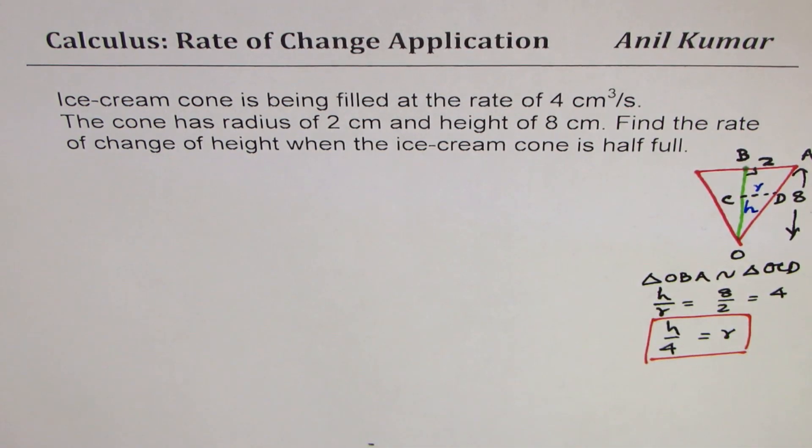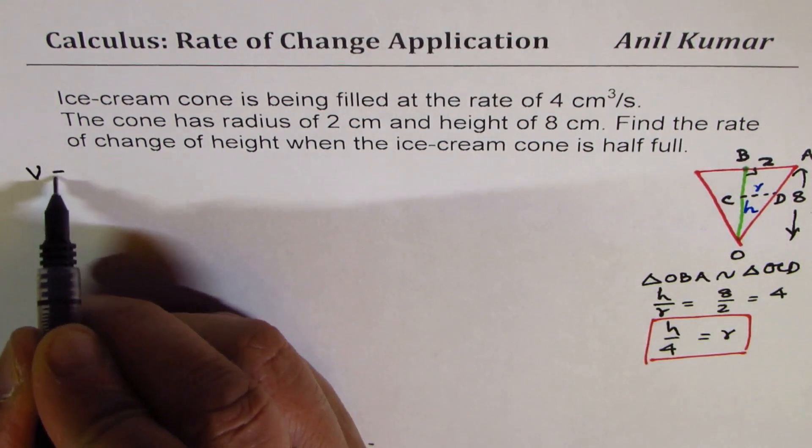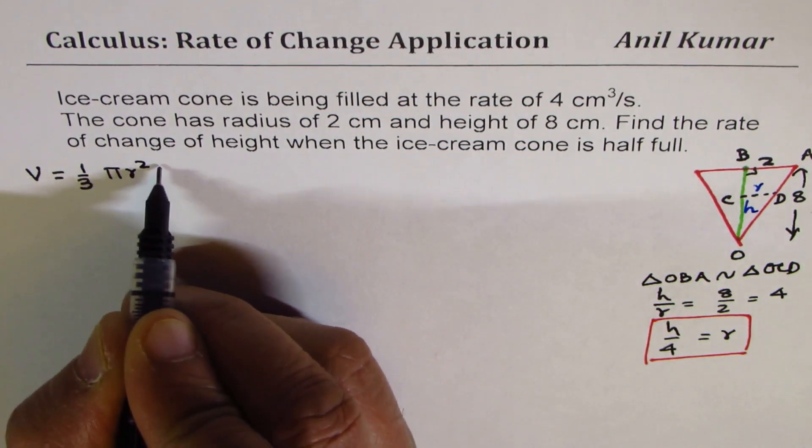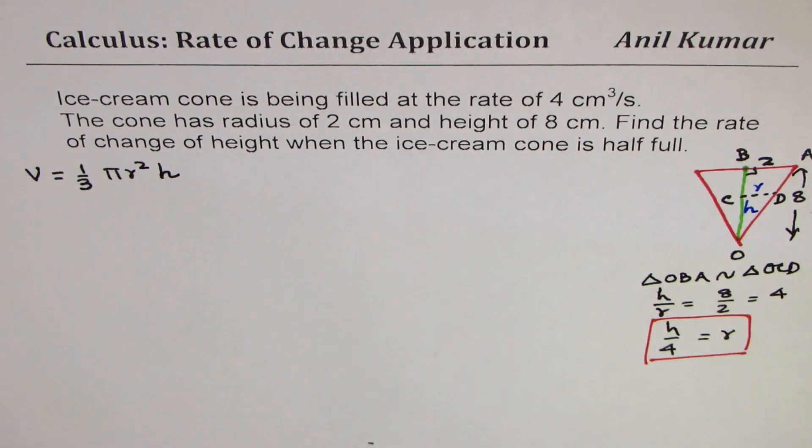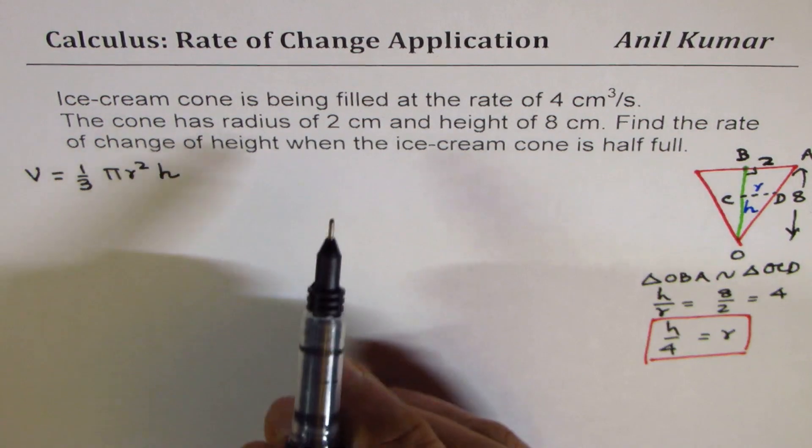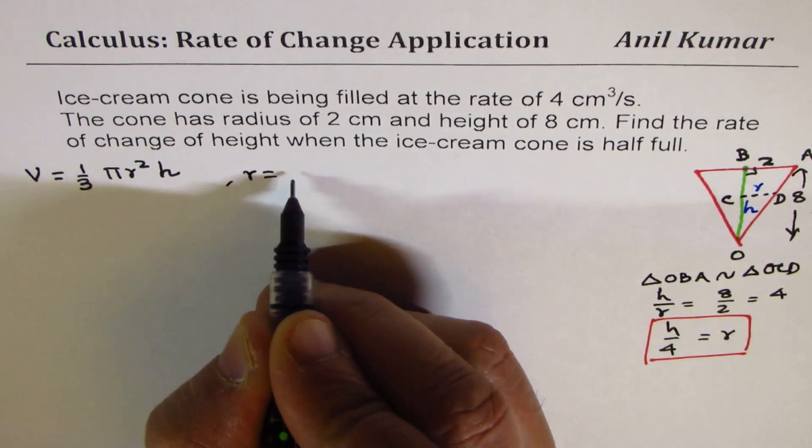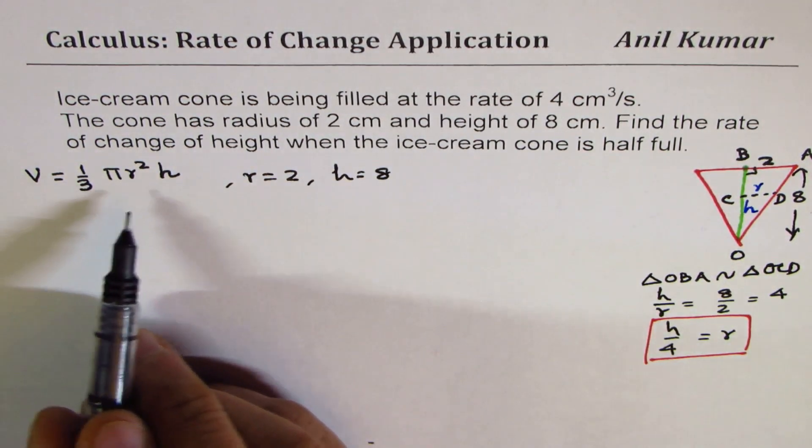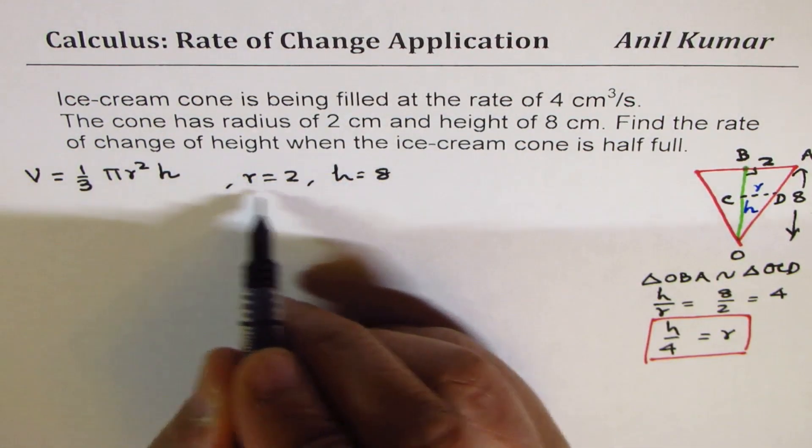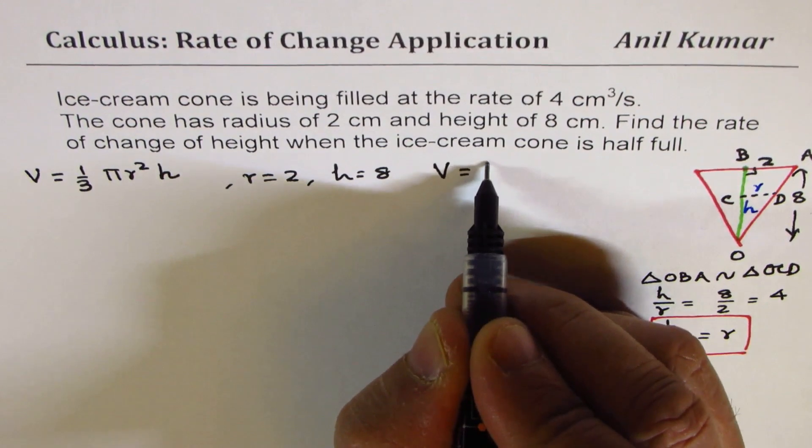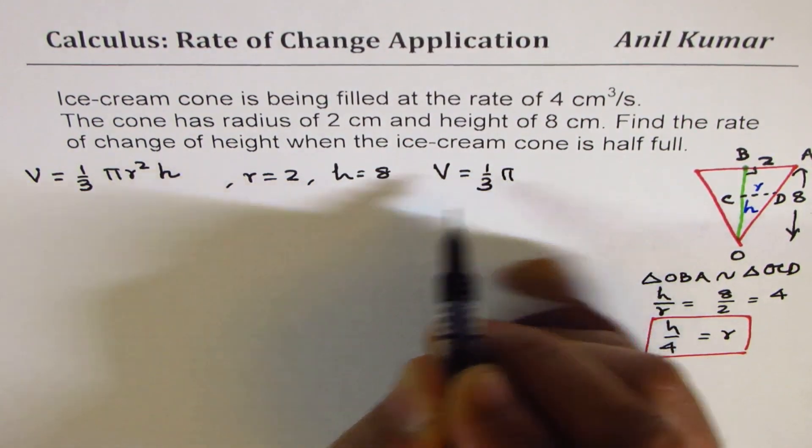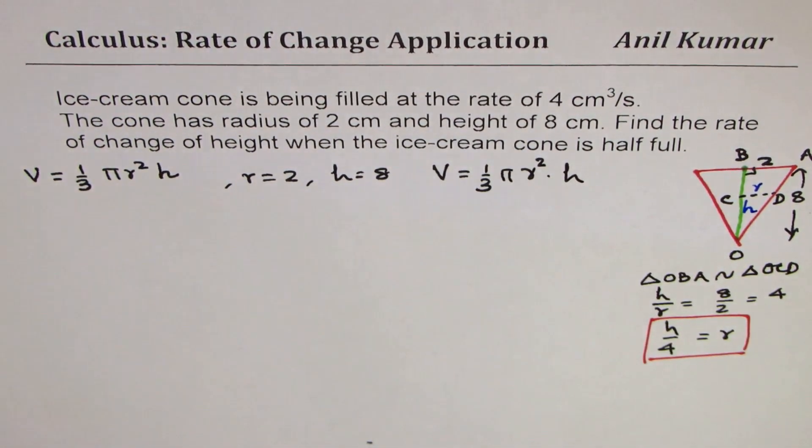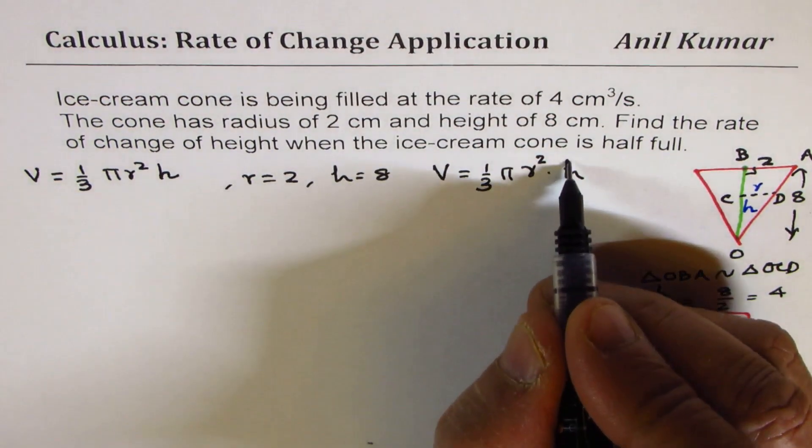Now second is, let's figure out what is the volume of a cone. So volume of a cone is (1/3)πr²h. Now, if we are given that the radius equals 2 centimeters and height equals 8, then the maximum volume is how much? Let's figure that out. So with this dimension, volume is (1/3)π(2²) times height. So let's calculate this value. Height is 8.